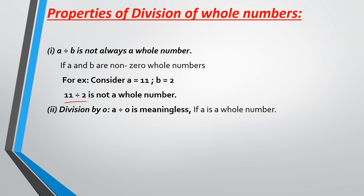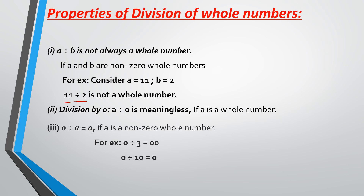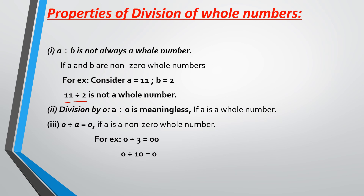Division by 0: any number divided by 0 is meaningless — you can't divide any number by 0, it doesn't have any meaning at all. The third property is when you divide 0 by a whole number, your answer is always going to be 0. When you divide nothing, the answer is also nothing. For example, 0 divided by 3 is 0, and 0 divided by 10 is also 0. There is not going to be any change.